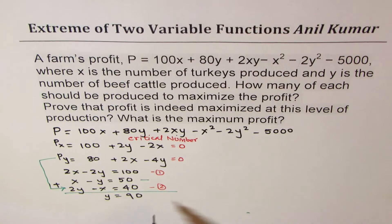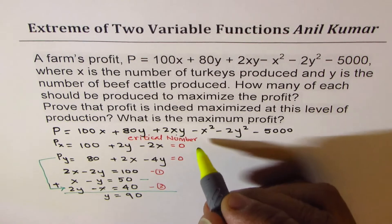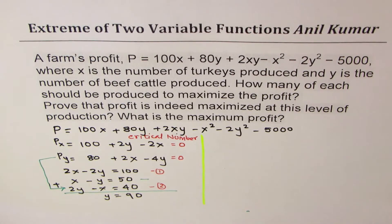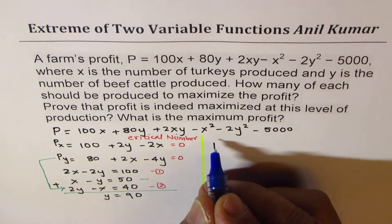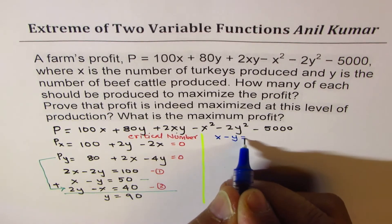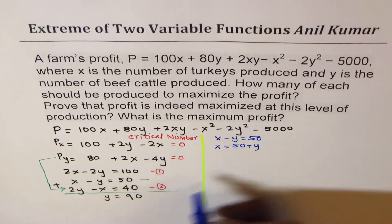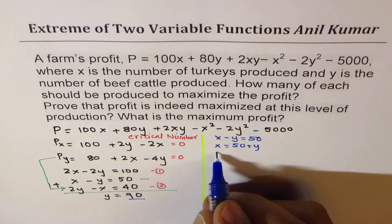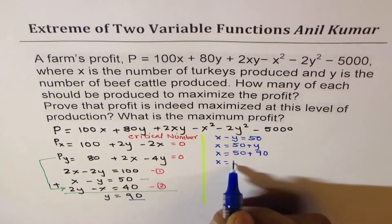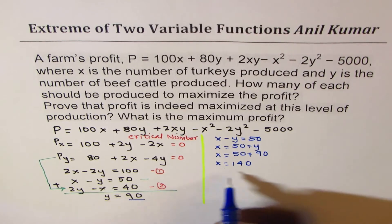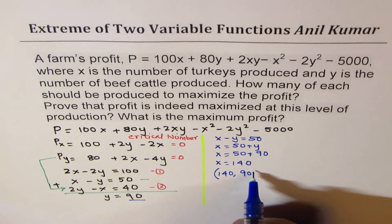To find the value of x, I can pick up one of the equations — let's say x minus y equals 50. I can write this as x equals 50 plus y. We know y is 90, so x equals 50 plus 90, which gives x equals 140. So we do have a critical number, which is (140, 90).